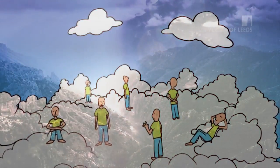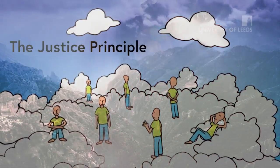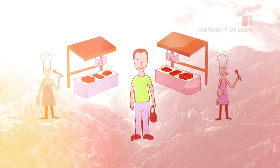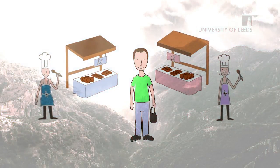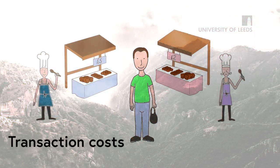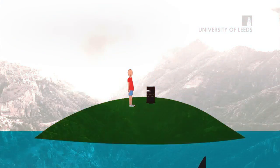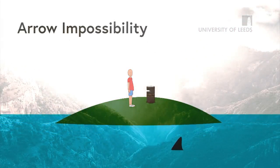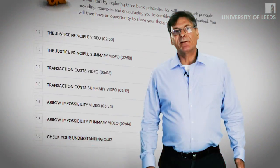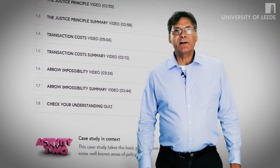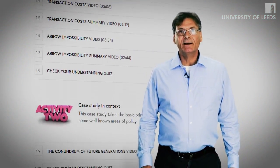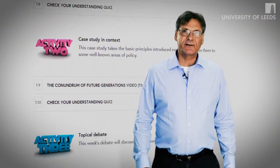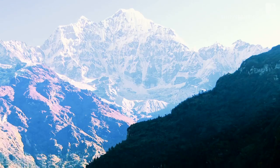We start by exploring three basic principles: the principles of justice, the principles associated with transaction costs, and the problem of aggregating social preferences. These principles will be applied to a case study and informed discussion on justice in natural resource management.